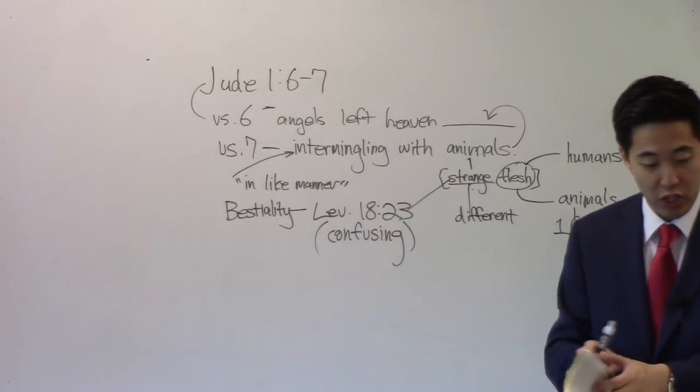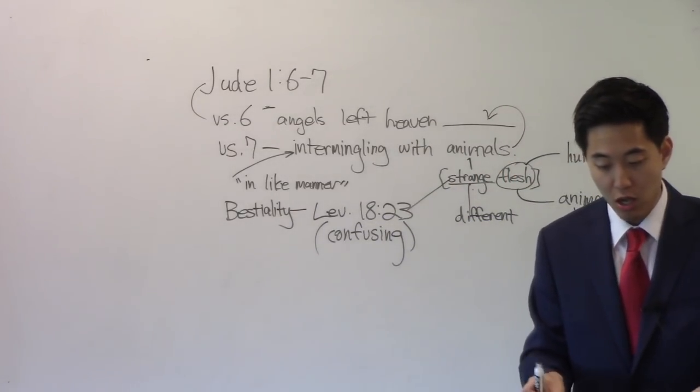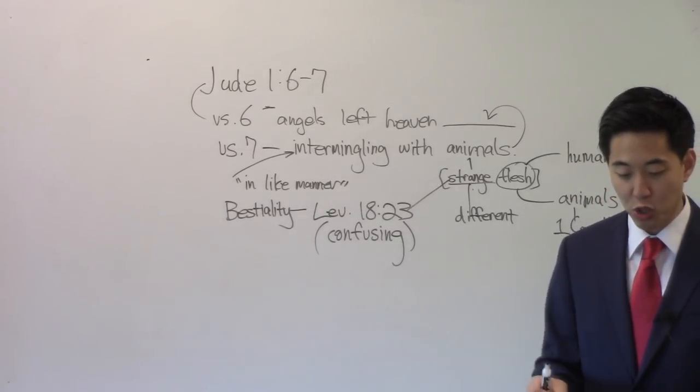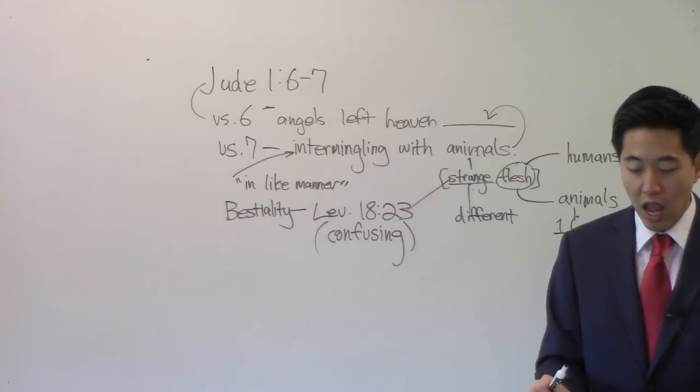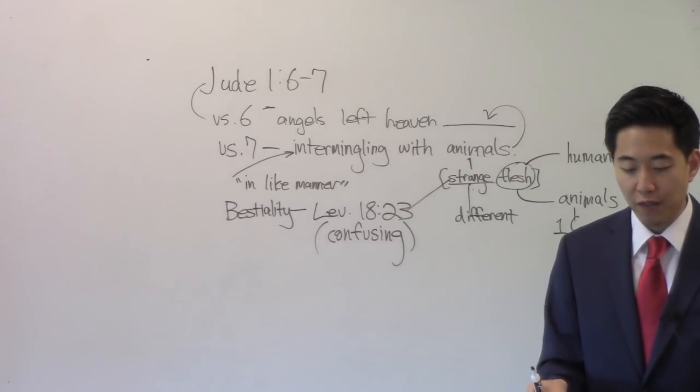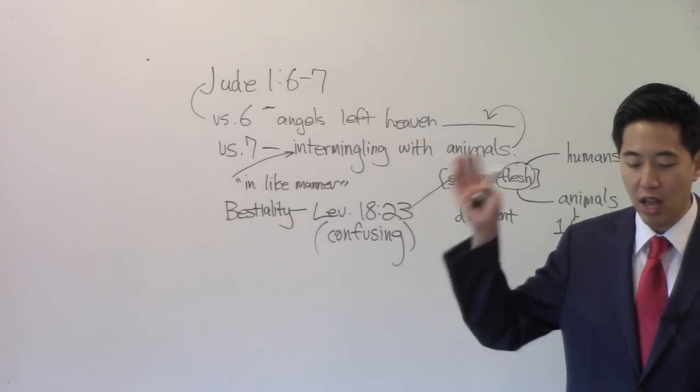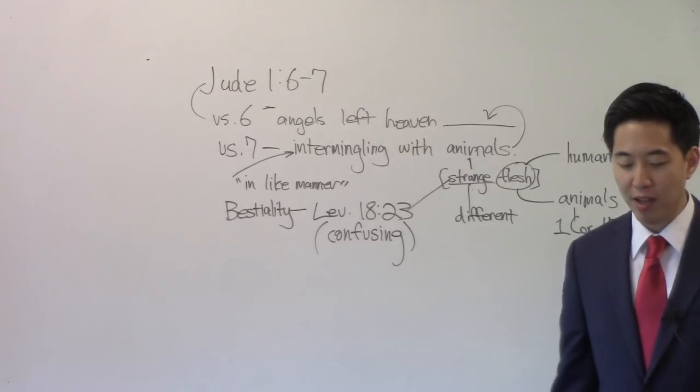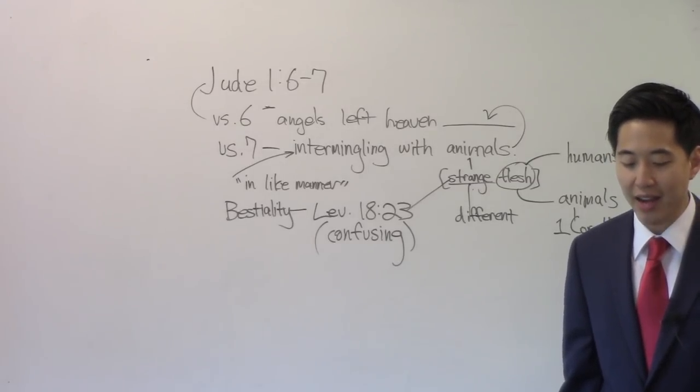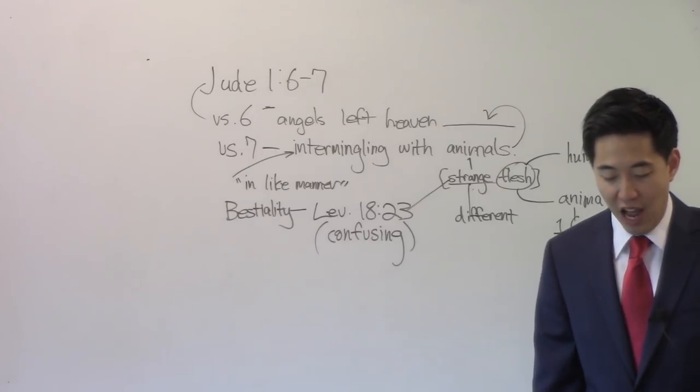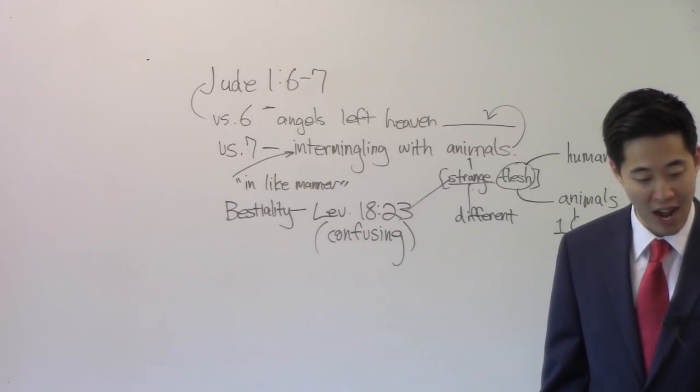Chapter 7, verse 21. And all flesh died that moved upon the earth - fowl, cattle, beast, every creeping thing, and every man. All in whose nostrils was the breath of life, of all that was the dry land died.